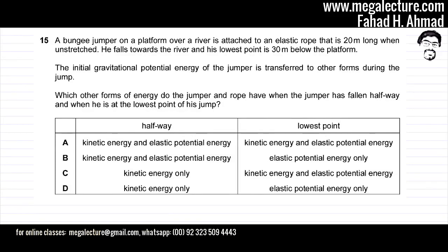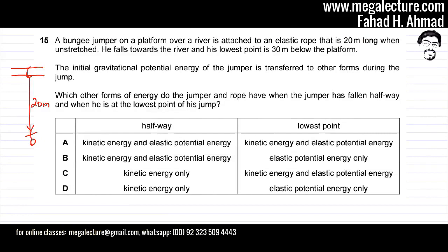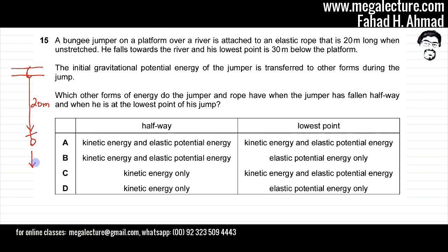The question reads that a bungee jumper on a platform over a river is attached to an elastic rope that is 20 meters long when unstretched. He falls towards the river and his lowest point is 30 meters below the platform, which means that the bungee jumper is going to stretch the rope a further 10 meters.